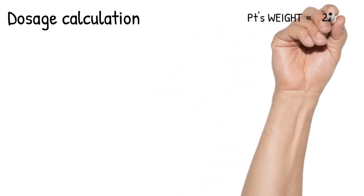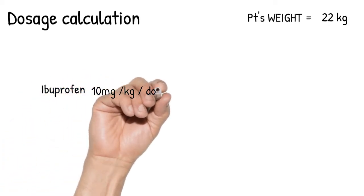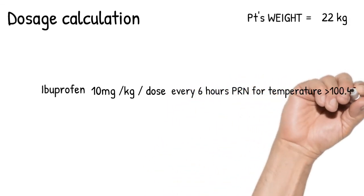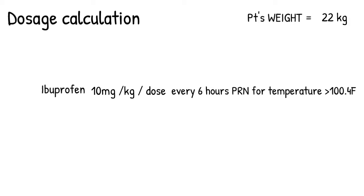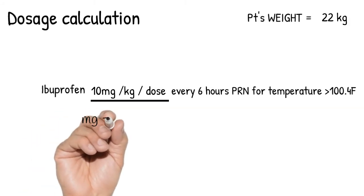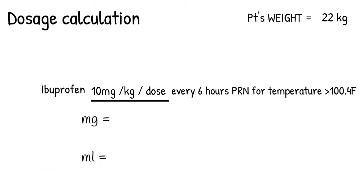We're still talking about dosage calculation, and the second form of dosage is weight-based. Let's say the doctor orders ibuprofen 10 milligrams per kilogram per dose every six hours as needed for temperature above 100.4. We're not giving this kid 10 milligrams, but we're giving him 10 milligrams per kilogram per dose. Nurses in the scenarios will give me two things: how much dose in milligrams and how much volume in mls. For the dose, we have everything we need, so based on 10 milligrams per kilogram and the patient's weight, we will give this kid 220 milligrams.